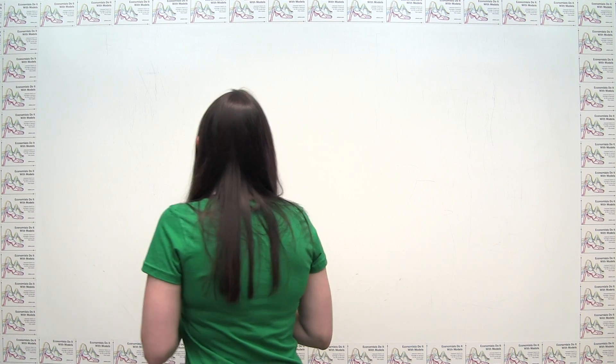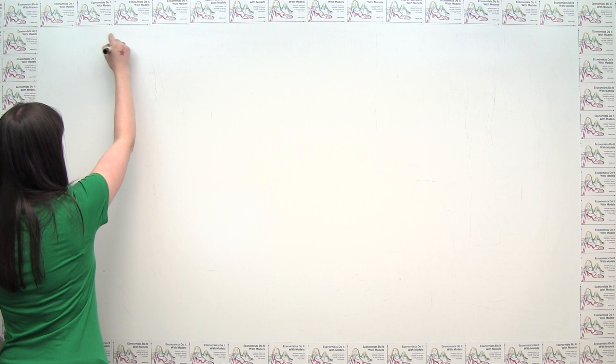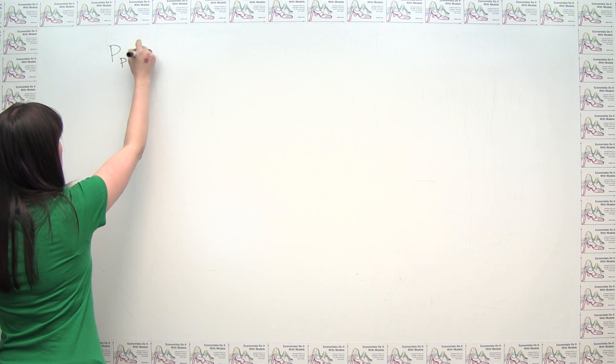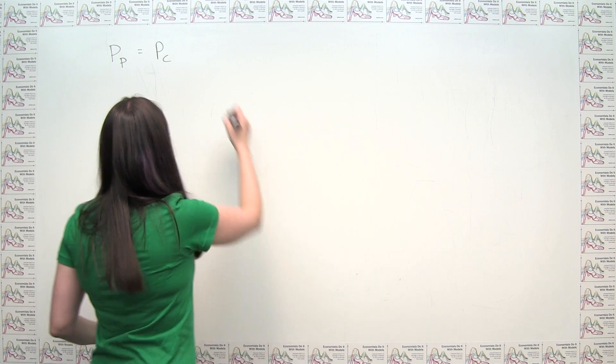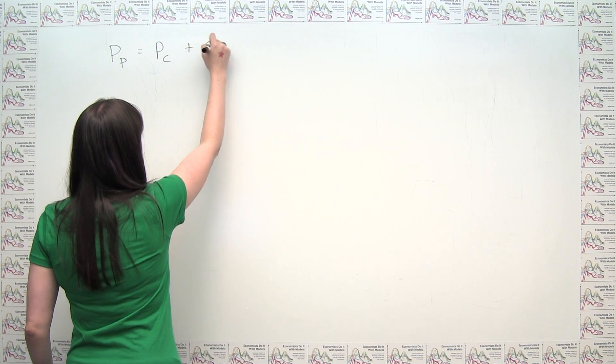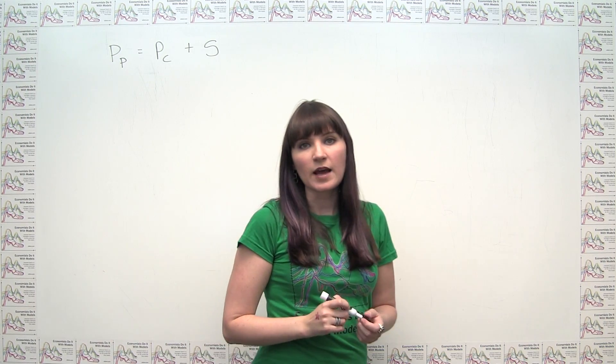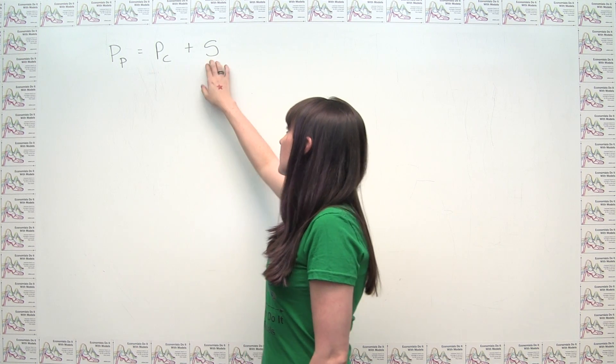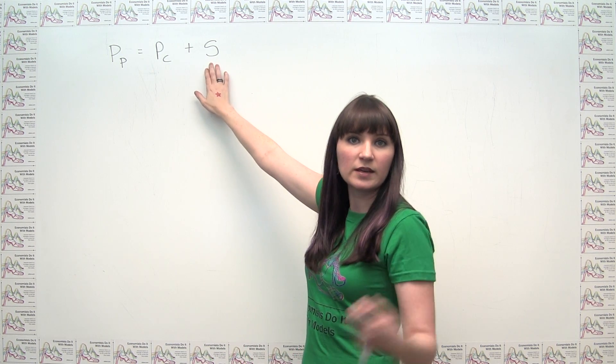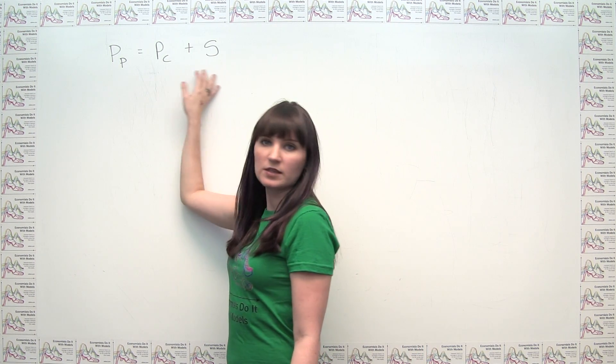So let's think about what that means algebraically. We can actually say that the price that the producer receives under a subsidy is equal to the price that the consumer pays out of pocket plus the amount of the subsidy. Intuitively you can think of this as the producer gets a certain amount of money from the consumer and then has a certain amount of money from the government kick their way as well for every unit that is produced and consumed in this market.